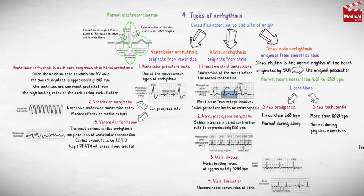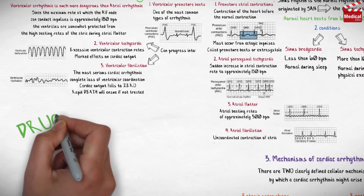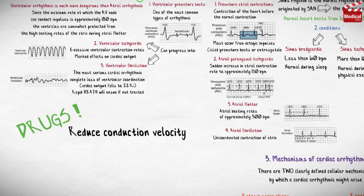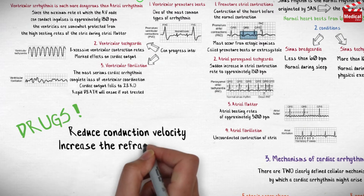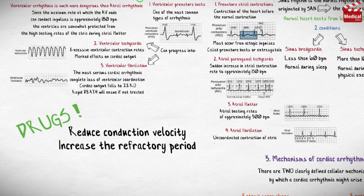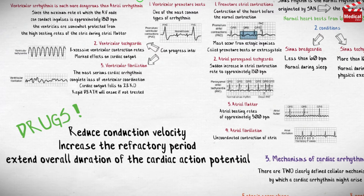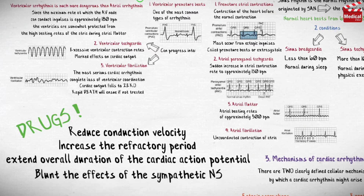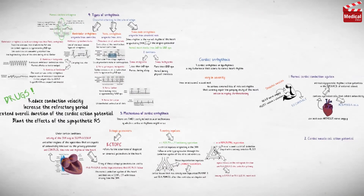So we can conclude the mechanisms of the drugs used to manage cardiac arrhythmias: they should reduce conduction velocity, increase the refractory period, extend the overall duration of the cardiac action potential, or blunt the effects of the sympathetic nervous system on the heart. That is what we'll discuss in detail in the next lecture.